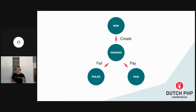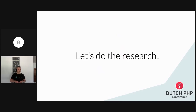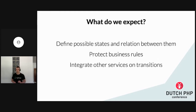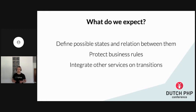The idea was pretty clever. However, Kelly wanted to do some research to bring something from the ecosystem, maybe take some additional functionalities available on the market. What could we expect from a library? First, we need to define possible states and relations between them. It would be nice to protect some business rules with state machines — we do not want to shortcut the state machine. Some additional services could be called in the meantime, and some operations require a reaction or calling new services — so integrating with other services would be a nice add-on.